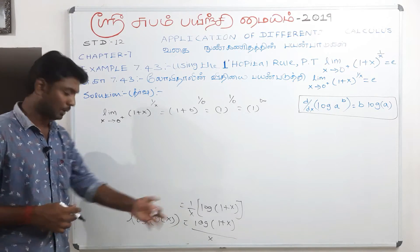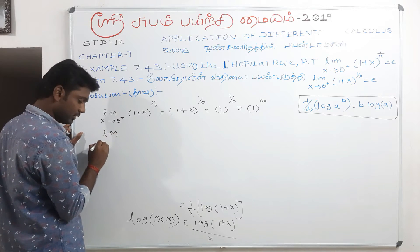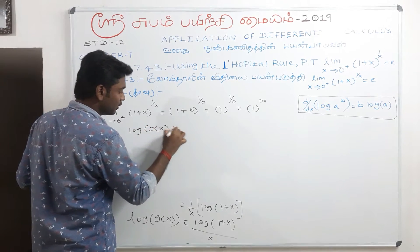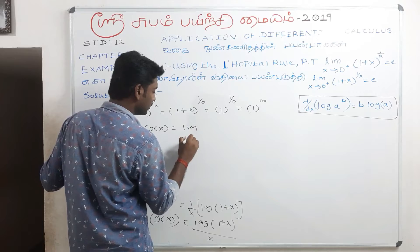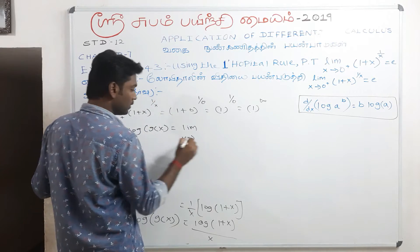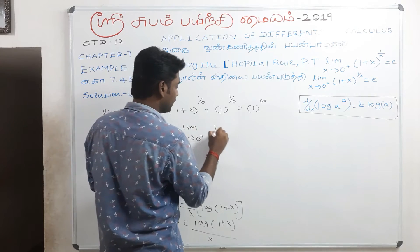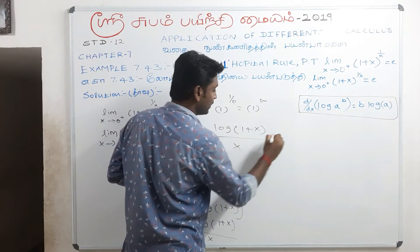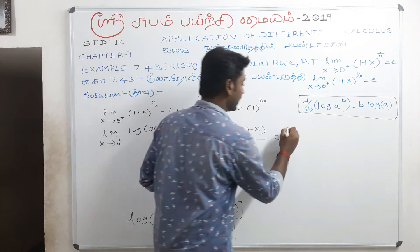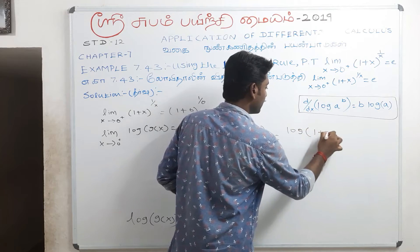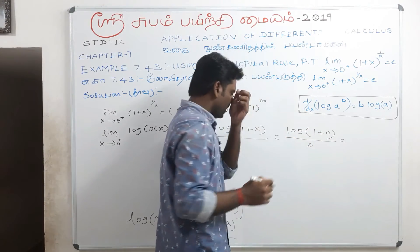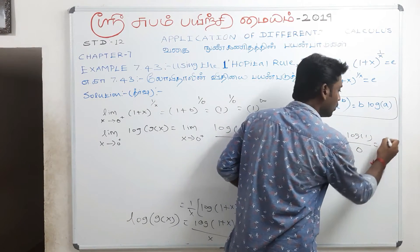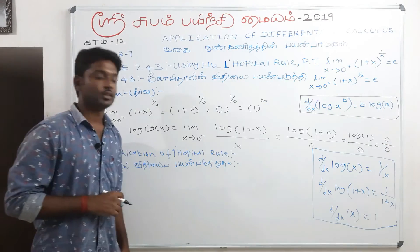We apply the limit as x approaches 0 plus. So log g of x equals limit x to 0 plus of log(1 plus x) divided by x. Substituting x equals 0 gives log(1 plus 0) divided by 0, which is log 1 divided by 0, giving us the indeterminate form 0 by 0.